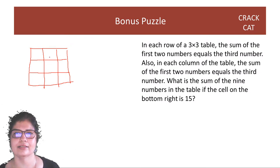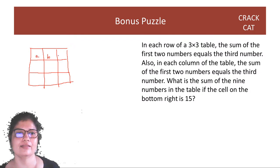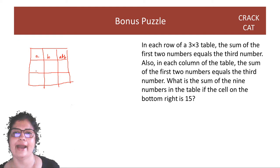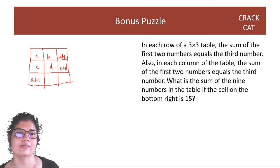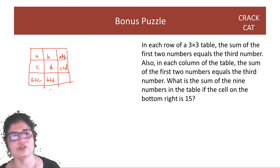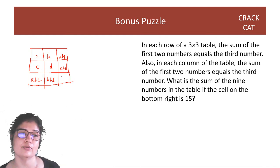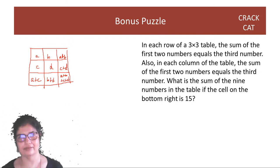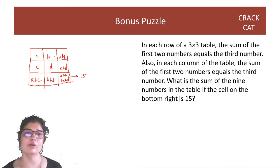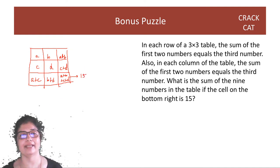So in this 3x3 table, the first cell is a, second is b, third is a+b. The second row is c, d, c+d. The columns follow the same rule: a+c, b+d. And the third row is basically a+b+c+d in the last cell. We know the last cell is 15, and I want to find the sum of all nine numbers.